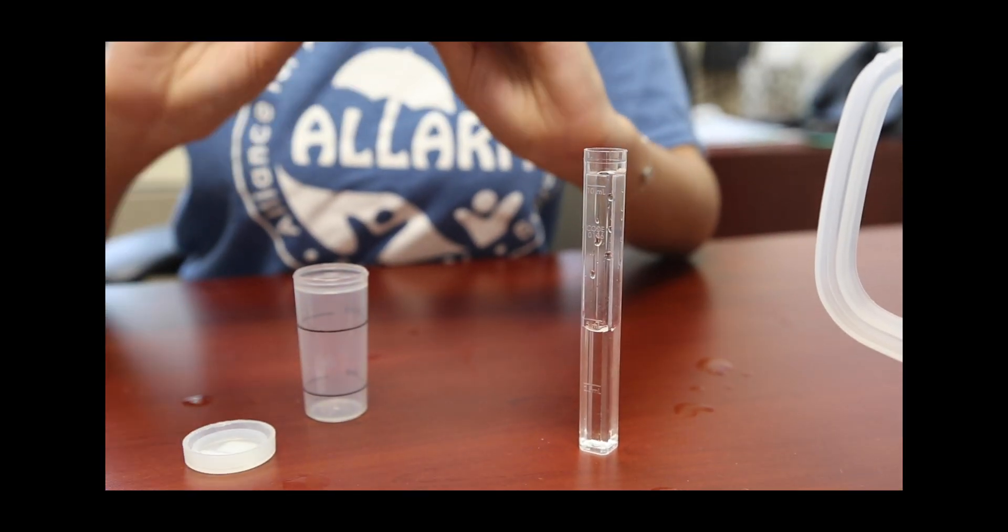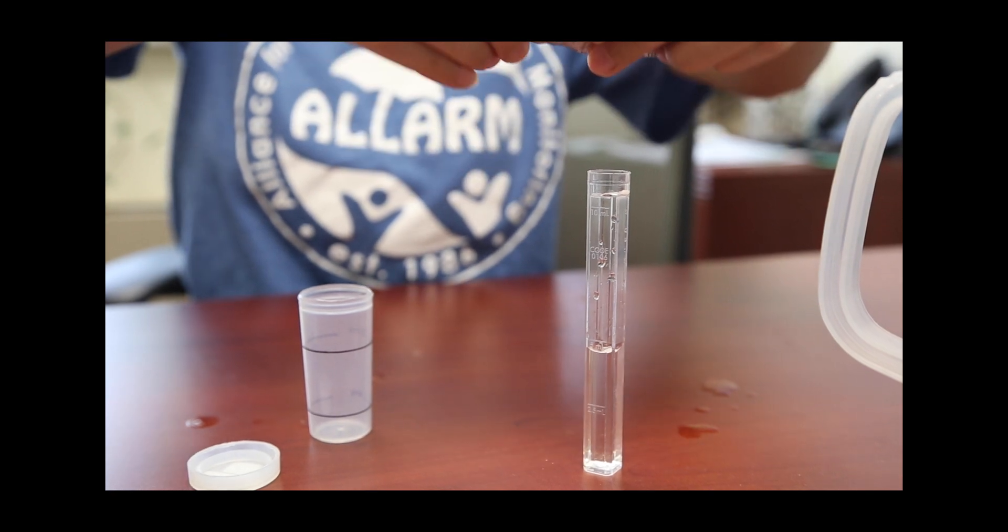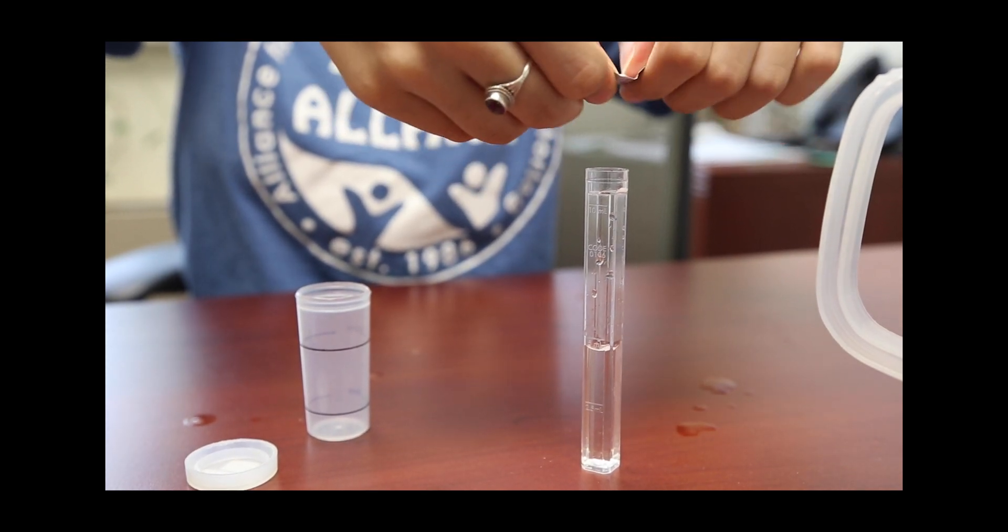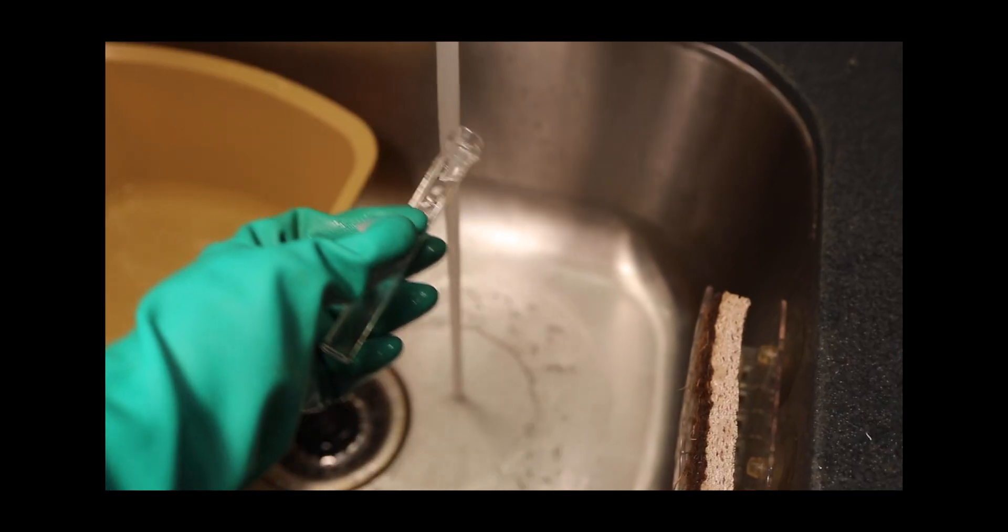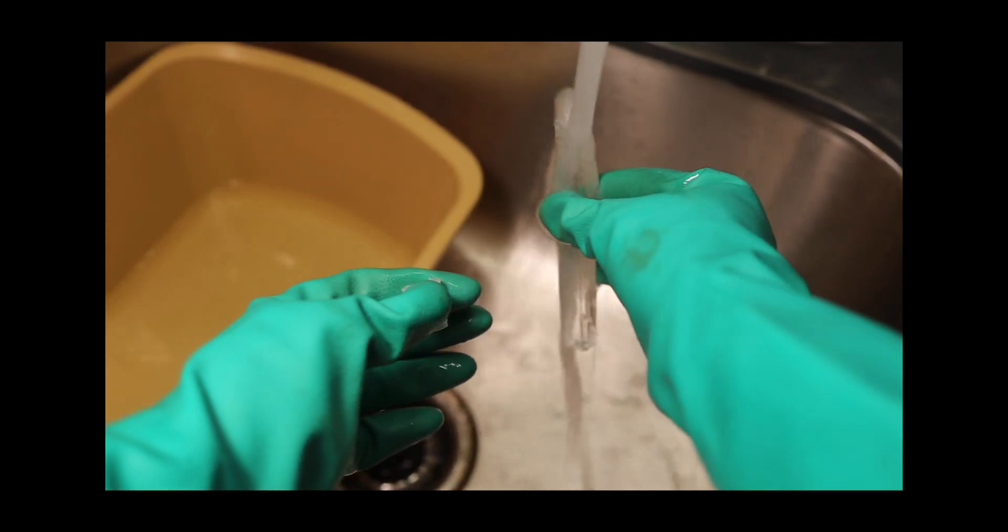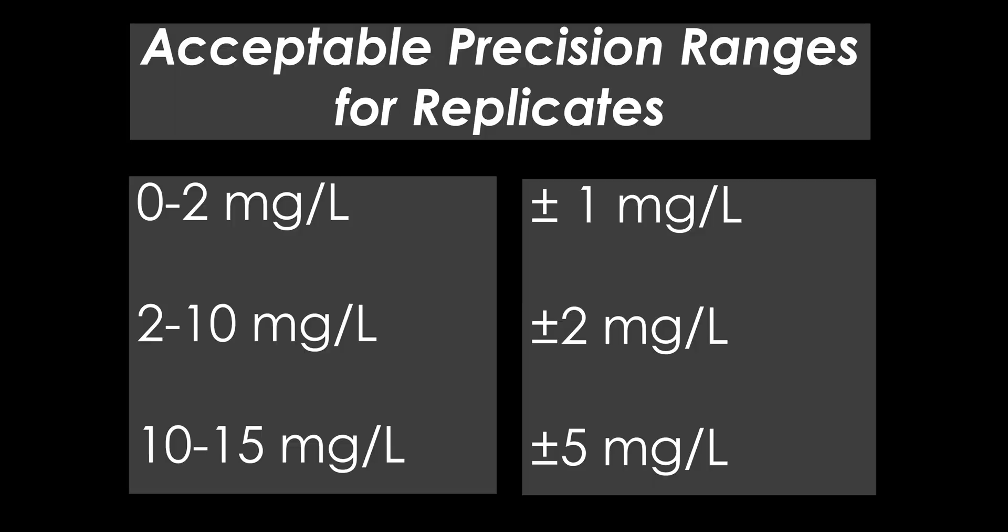If you choose to test each replicate individually, repeat the process using the second test tube. If you do not have a clean test tube available, be sure to clean your glassware the same way you would when done with testing. The values of the two replicates must be within the acceptable precision range.